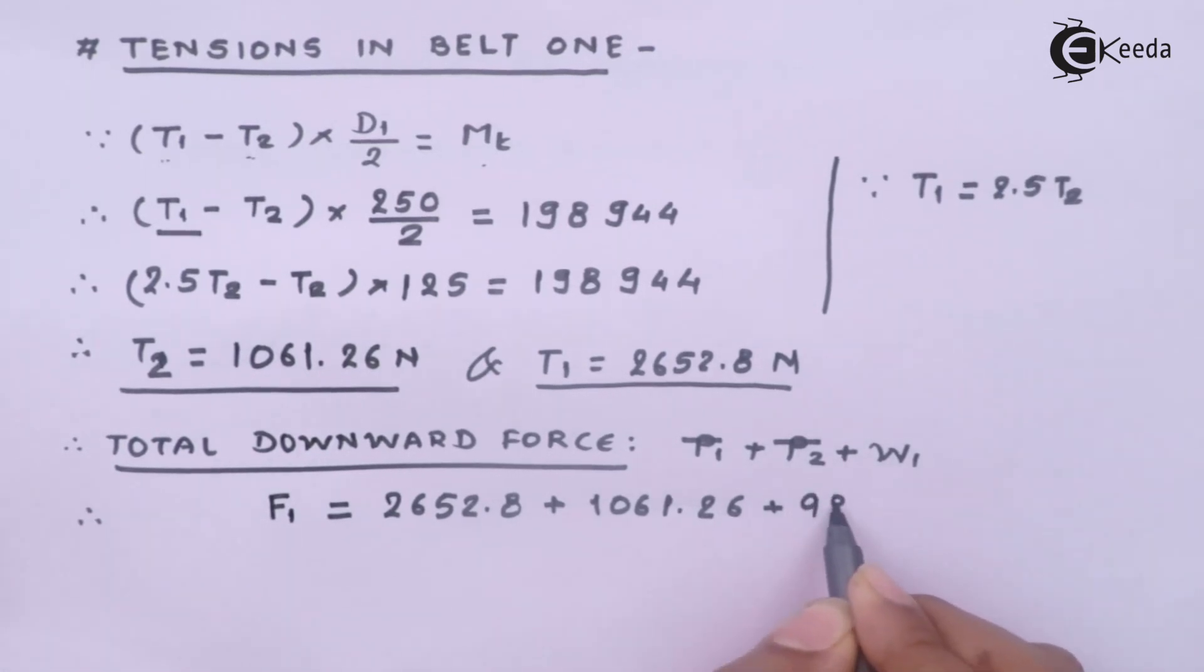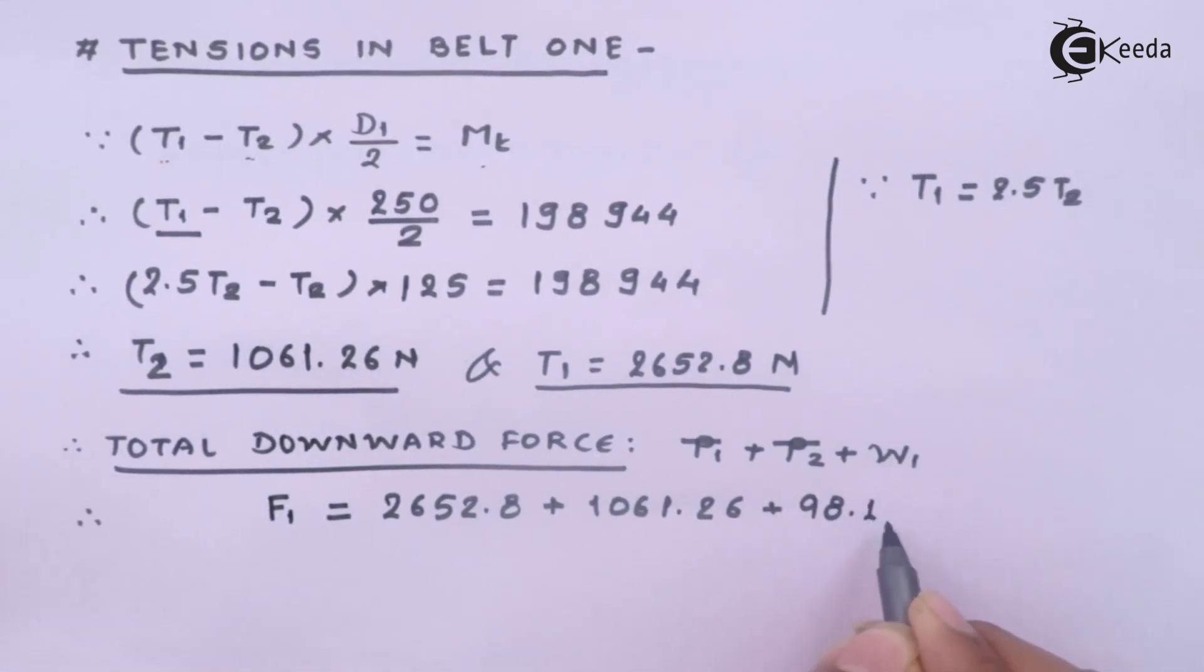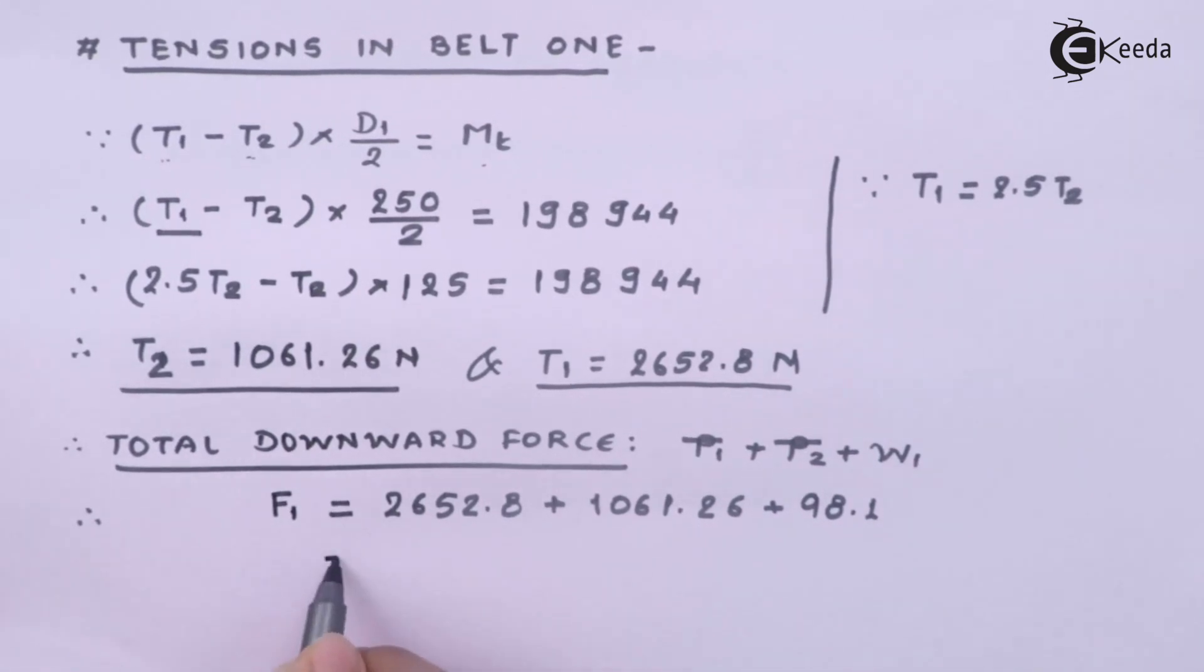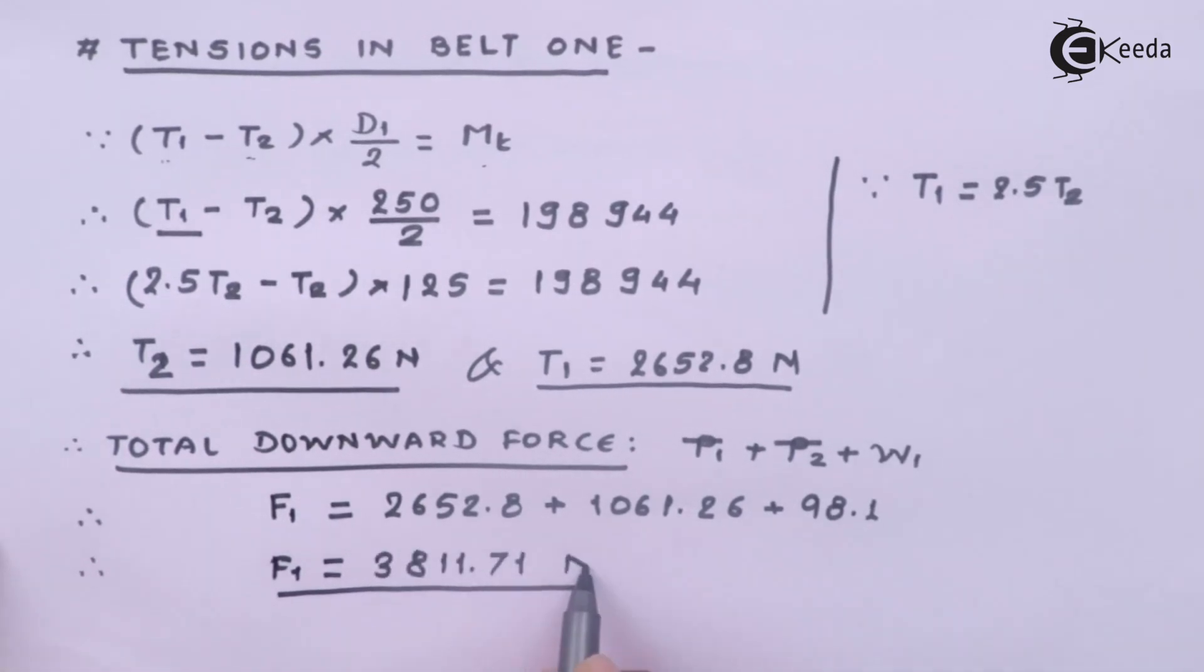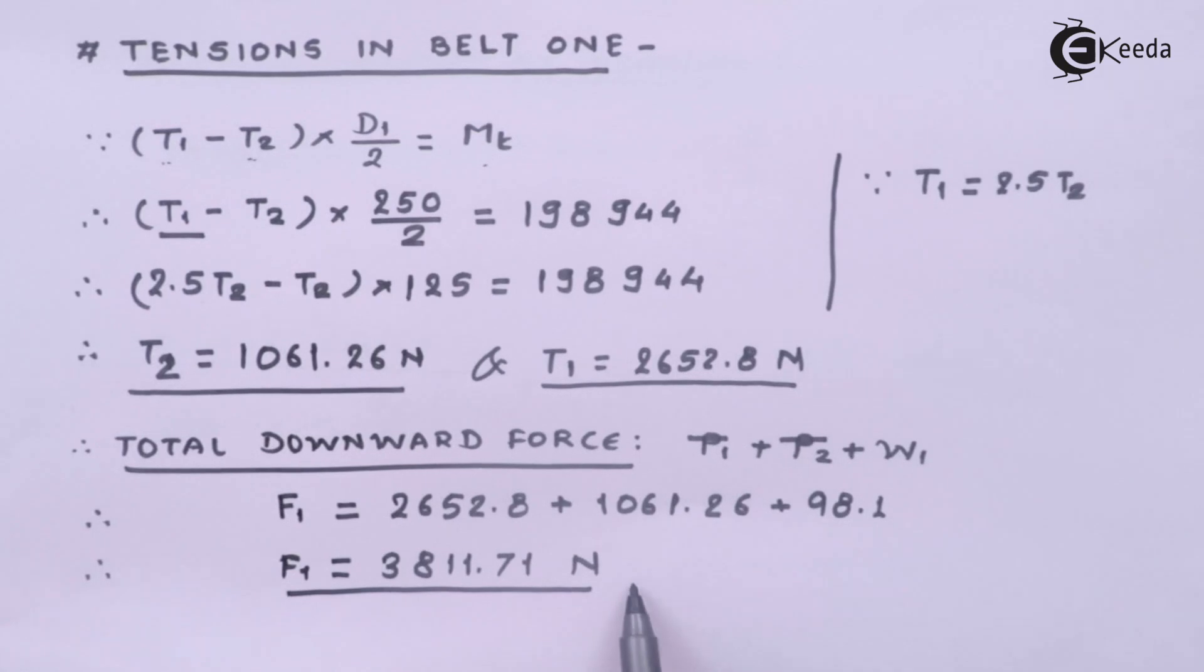The tension 1 is 2652.8 plus 1061.26 plus the weight of the pulley. We have been given 10 kg so it becomes Newton. And hence the total downward force comes out to be of course on pulley 1 somewhere around this value. So this is the final value of force acting on the first pulley.